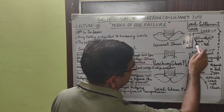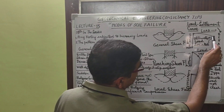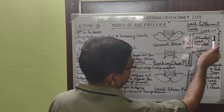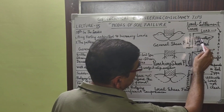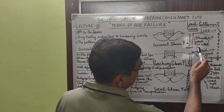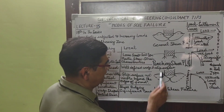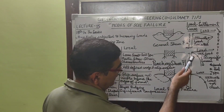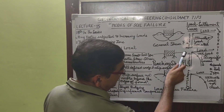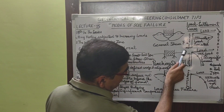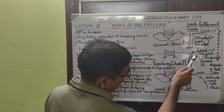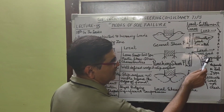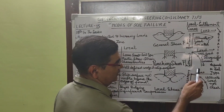When the load is increased, the settlement increases, and there is an abrupt failure of the foundation in general shear — you can very easily locate the ultimate load. In the second case of punching shear failure, as you increase the load, your settlement goes on increasing and it is very difficult to find out the ultimate load — it is not recognized easily.